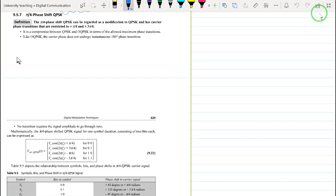We talk about π/4 phase shift QPSK, which is a modification of the normal QPSK. It's actually a compromise between the advantages of QPSK and those of OQPSK.